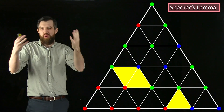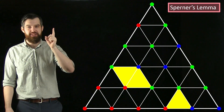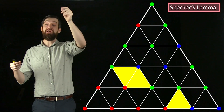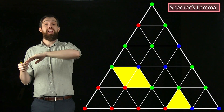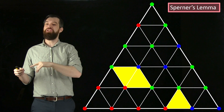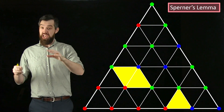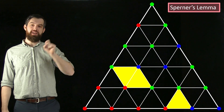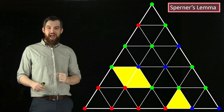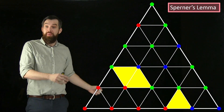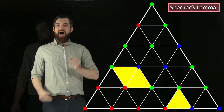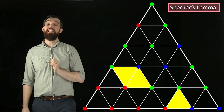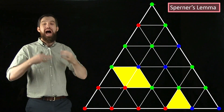So what does Sperner's Lemma actually say? It says this: if you color the triangulation via the rules — three different colors for the three outer vertices, you have to match the colors along the three edges, and you can do whatever you want in the middle — then there has to be at least one of these little triangles that has all three colors. To prove this, I'm going to draw paths that go through this particular color triangulation.